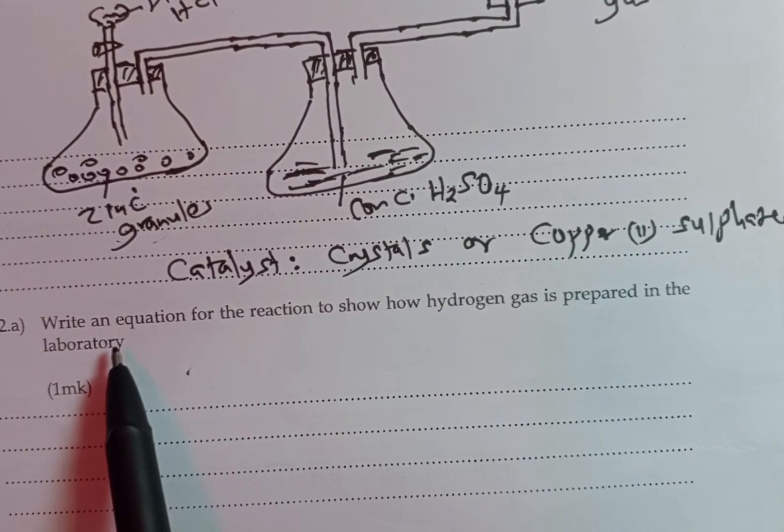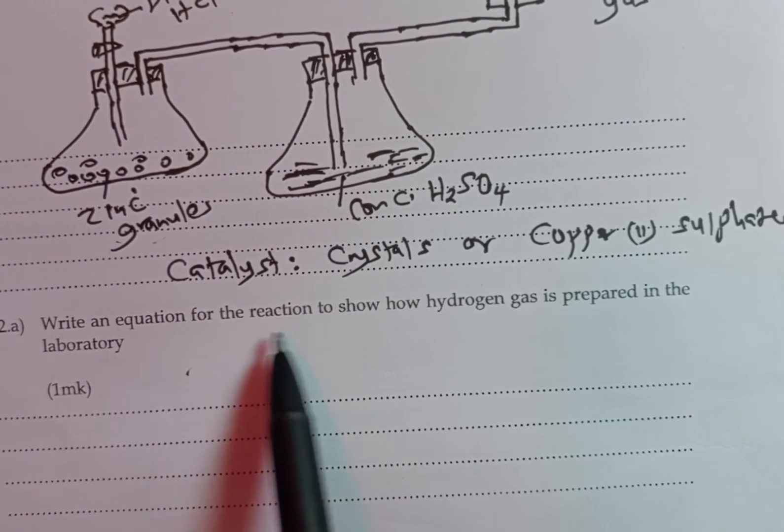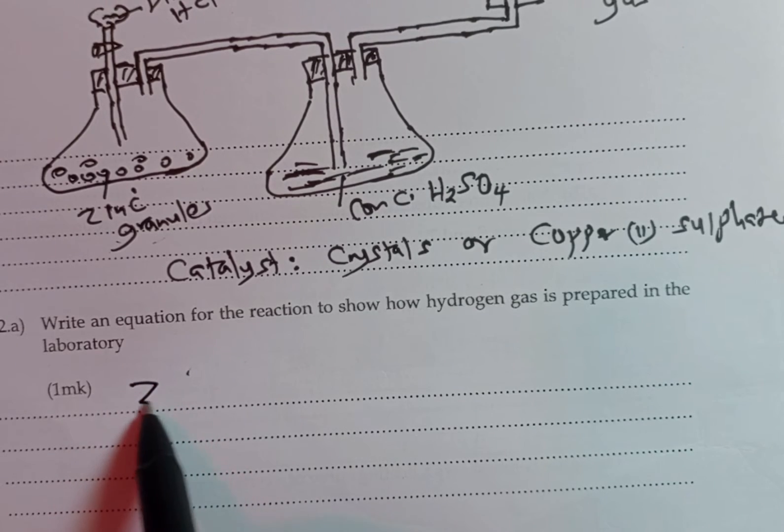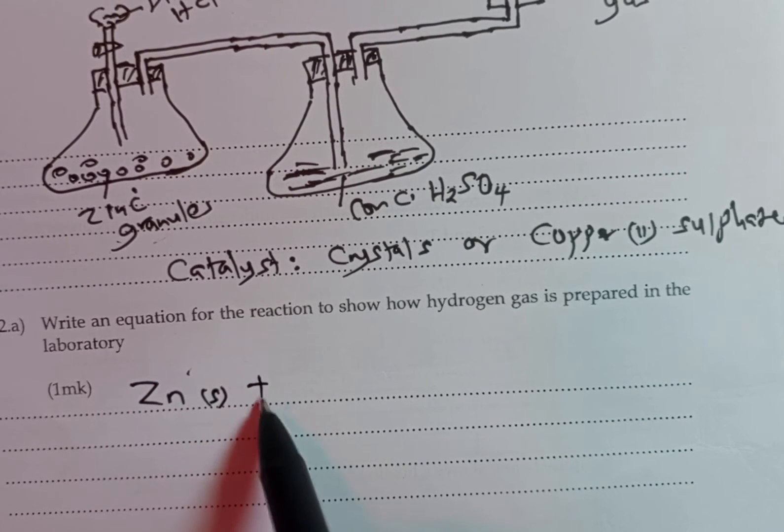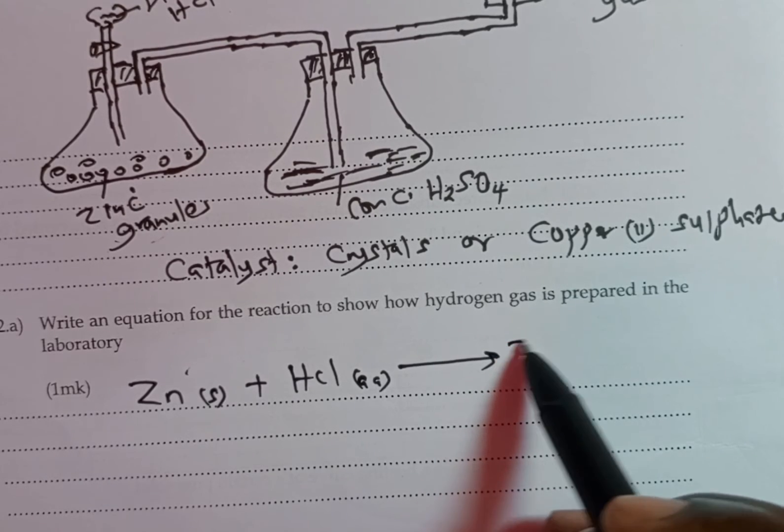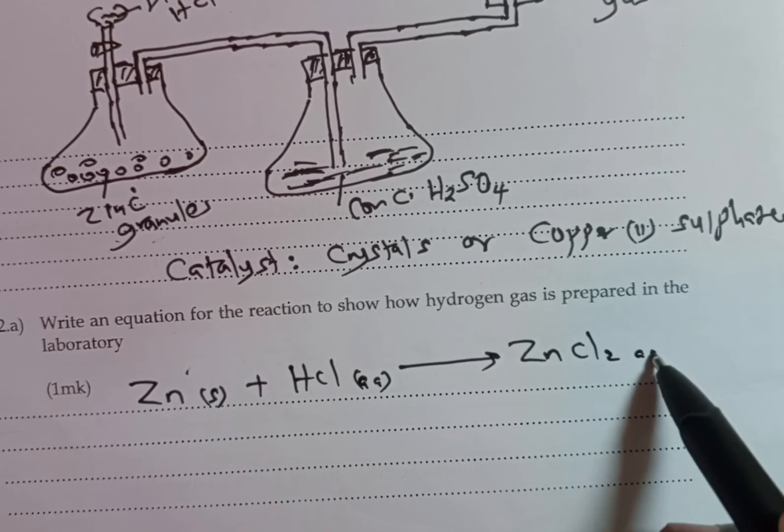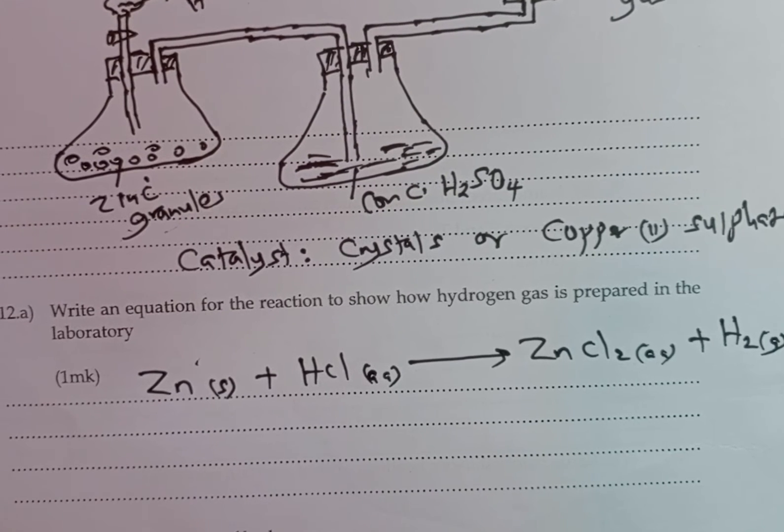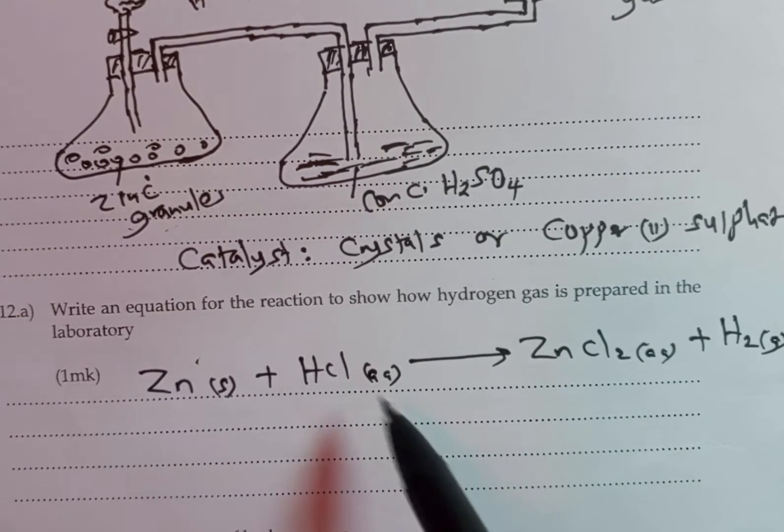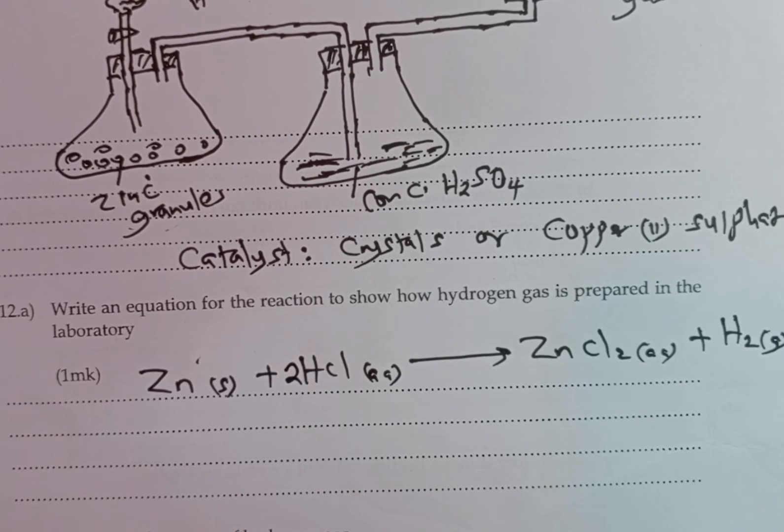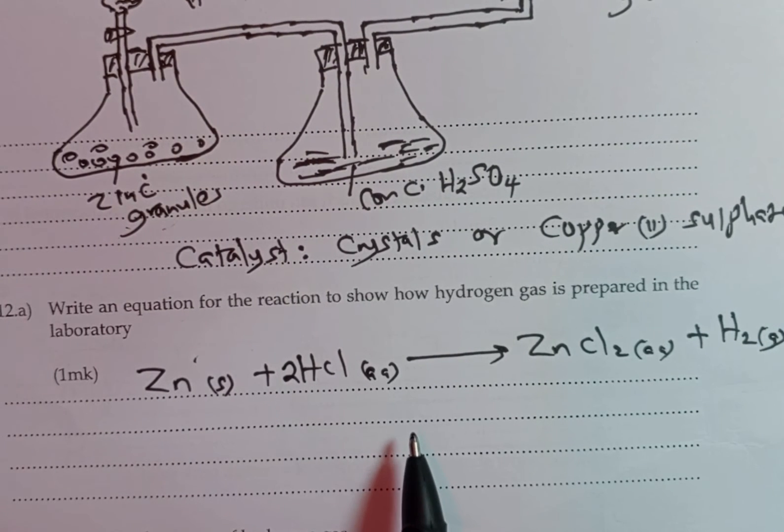The first part of the question we are supposed to answer: write an equation for the reaction to show how hydrogen gas is prepared in the laboratory. We react zinc metal plus dilute hydrochloric acid, and this will form zinc chloride plus hydrogen gas. Zn(s) + 2HCl(aq) → ZnCl2(aq) + H2(g). You can balance the equation by writing 2 before hydrochloric acid, and that is the complete chemical equation.